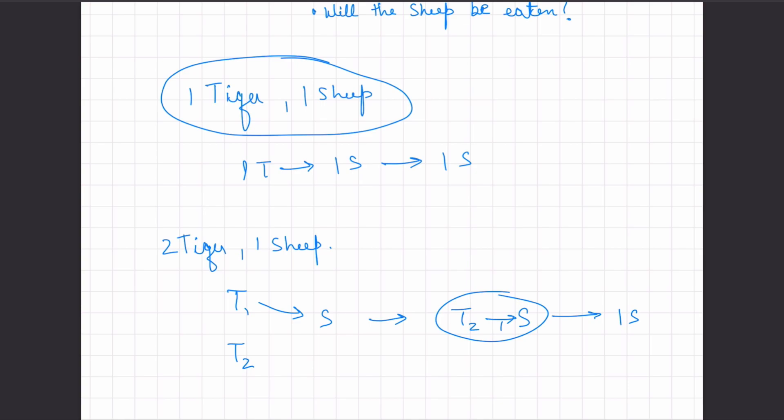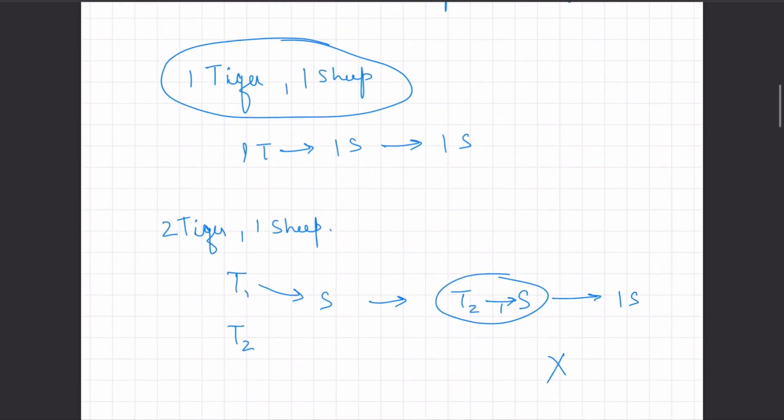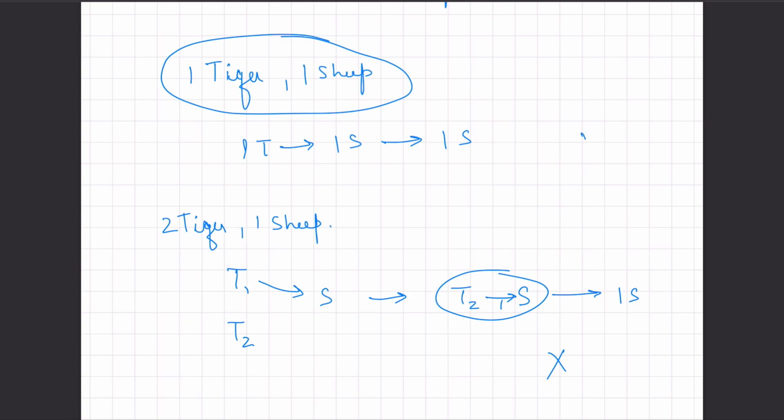And the same goes for tiger two. So tiger two attempts to eat the sheep, there's tiger one who will eat the remaining one sheep, which was basically formed after tiger two ate the sheep. So in this case, the sheep won't be eaten. And like we said, in the first one tiger, one sheep case, it would be eaten.